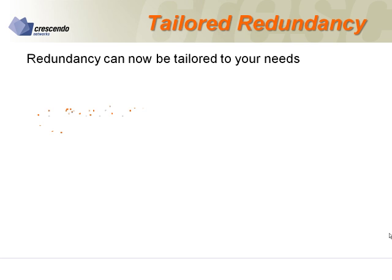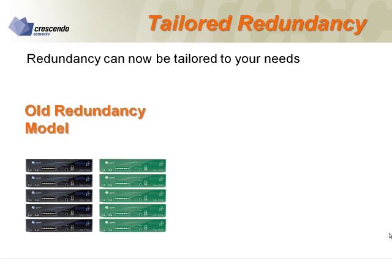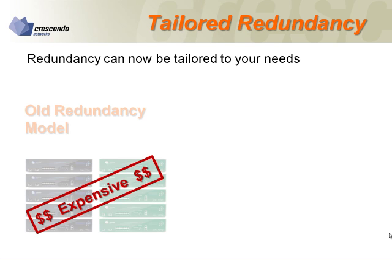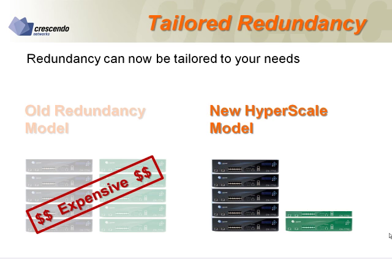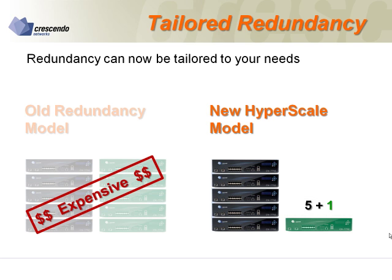The old ADC model required deploying ADCs in pairs, which is very inefficient and very expensive. With the Hyperscale redundancy model, you can still have double the amount of units for redundancy. But you can also achieve redundancy at a lower cost by going to 5-plus-1 redundancy. Or, if your service requires it, you can build in extra redundancy — 5-plus-3, for example. This unique ability allows you to tailor your system to your needs and significantly reduce your system's cost.